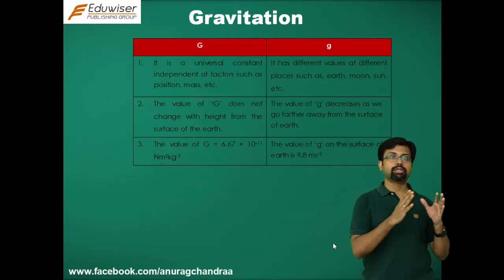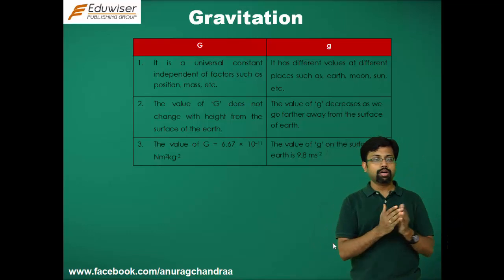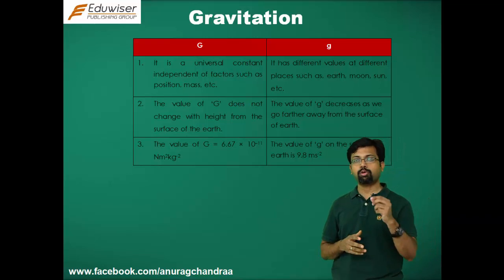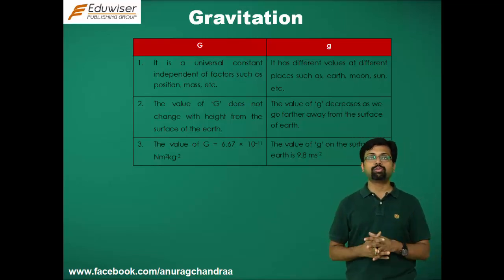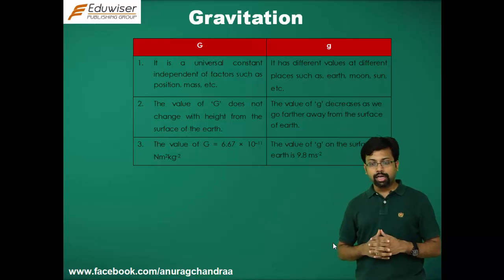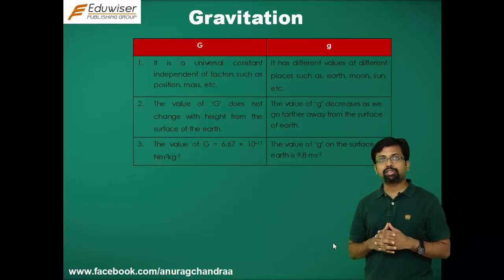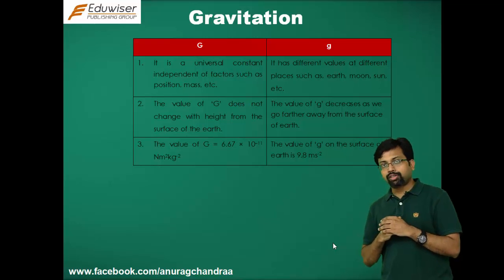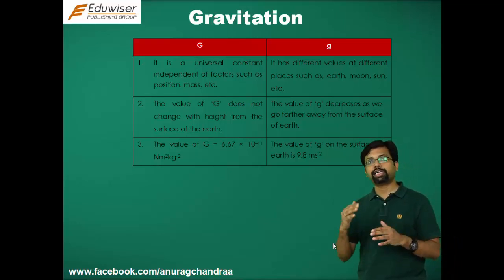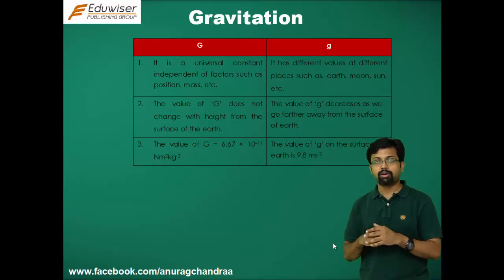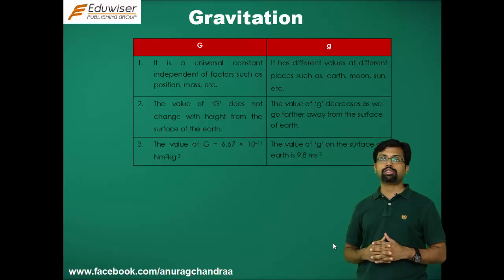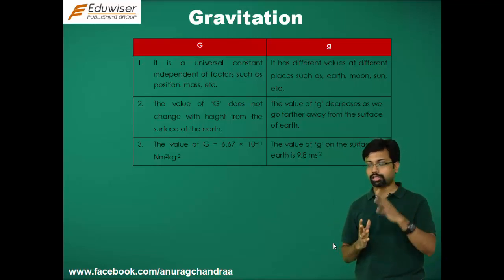We have studied both the universal gravitational constant G and the acceleration due to gravity g. The first difference is that capital G is a universal constant, independent of factors such as position and mass, while small g has different values at different heights from the surface of the earth, moon, or sun. Capital G remains constant throughout the universe, which is why it is called the universal gravitational constant.